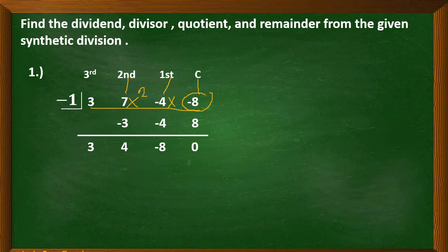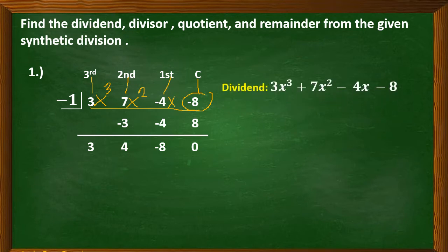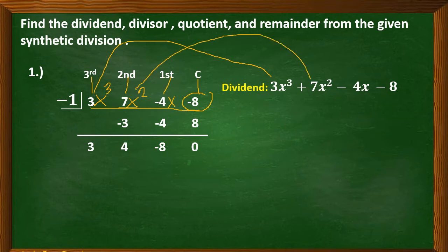And lastly, we have 3 for the third degree term, so we will have 3x cubed. Therefore, our dividend is 3x cubed plus 7x squared, then negative 4x, and the last term — the constant term — is negative 8.